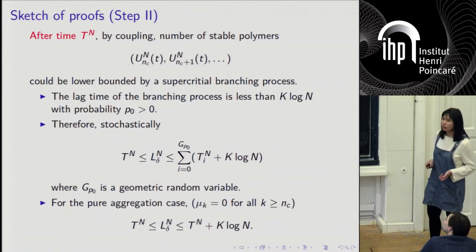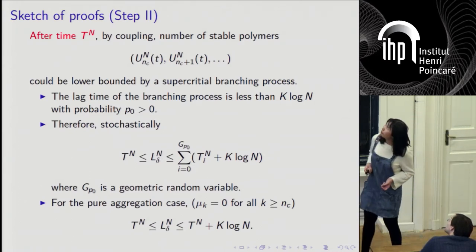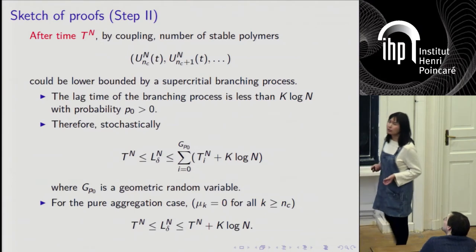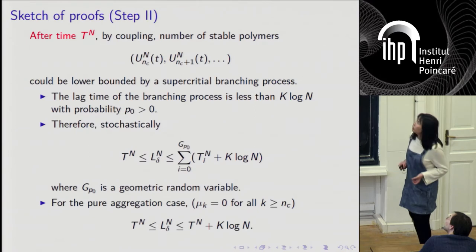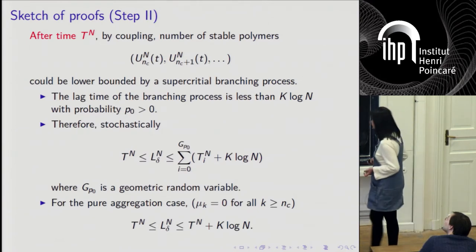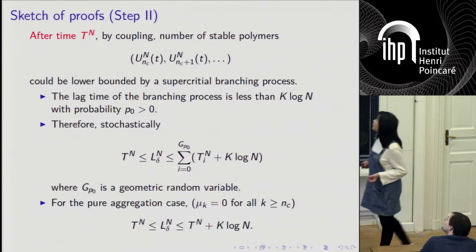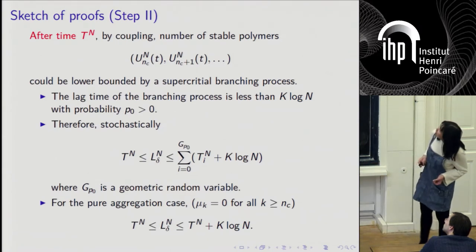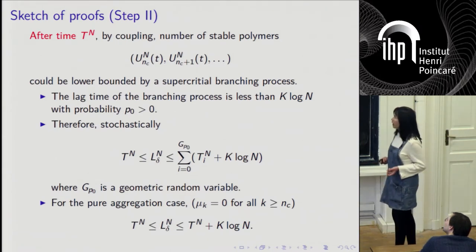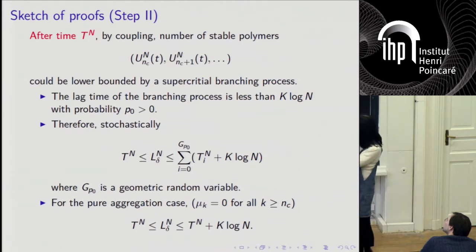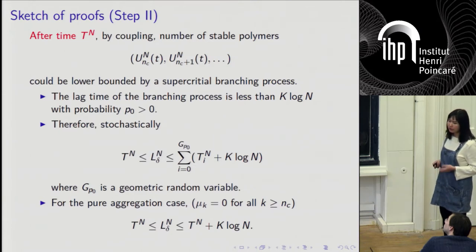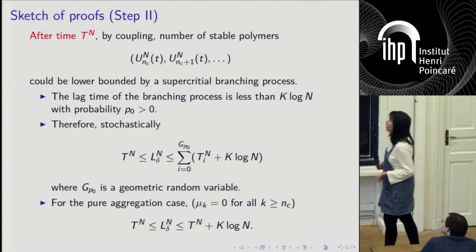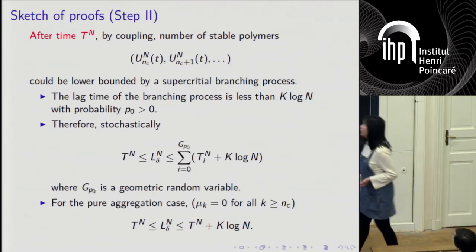After this first nucleus time, we can find a lower bound by coupling to the number of stable monomers using a supercritical branching process. We can show that with some probability, this lag time is less than k times log(N). Because it is a positive probability, it can give us a renewal process. So we can give a lower bound for the real lag time L_delta.